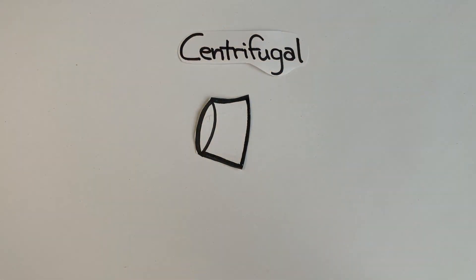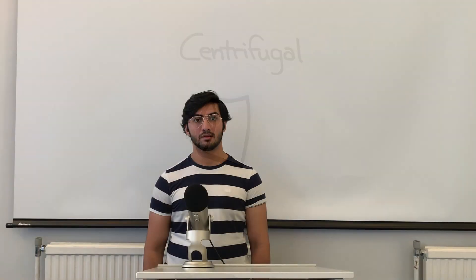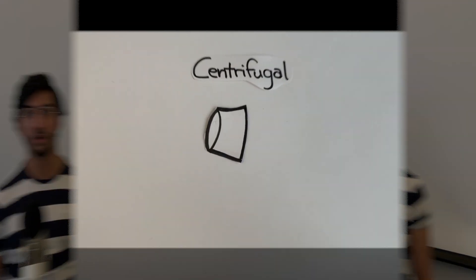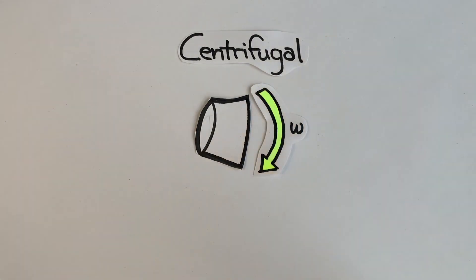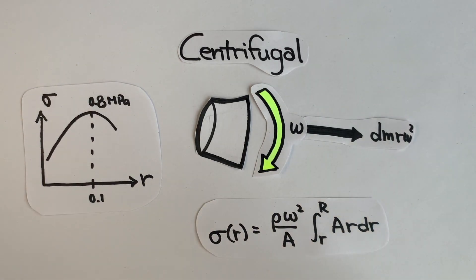In stress analysis, there are two main stresses acting on the turbine: the centripetal force and the bending-induced force. Each element of the blade will experience a centrifugal force in its frame of reference, leading to a stress distribution along the blades in the axial direction, as mathematically shown here. Implementing this in MATLAB, we calculated the stress distribution and found that the maximum stress experienced was 0.8 MPa at a distance of 0.1 m from the root of the blade.